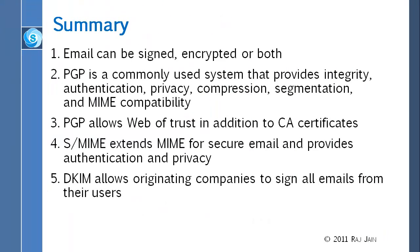In summary, this chapter covered five key points. First, email can be signed, encrypted, or both. We saw two methods: PGP and S-MIME. S-MIME is what is used in Outlook and most other programs; PGP is one of the older ones. We also saw DKIM, which is totally transparent to the user — you don't even know that your company is using DKIM. PGP is a commonly used system that provides integrity, authentication, privacy, compression, segmentation, and MIME compatibility.